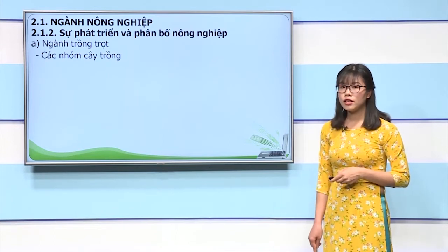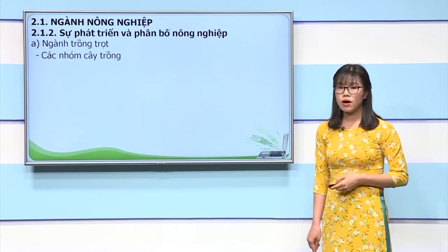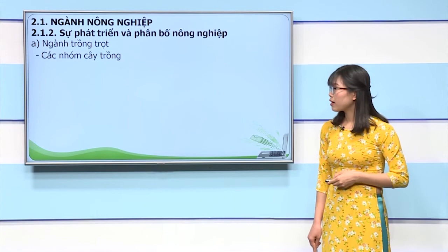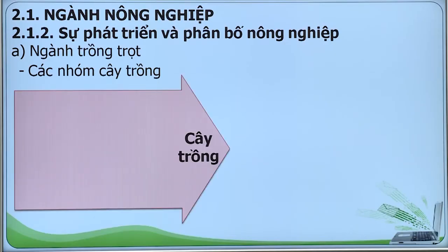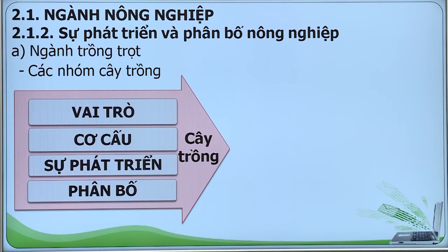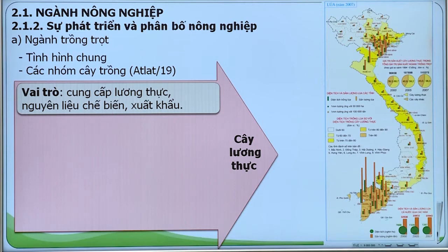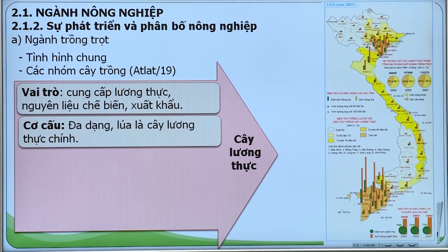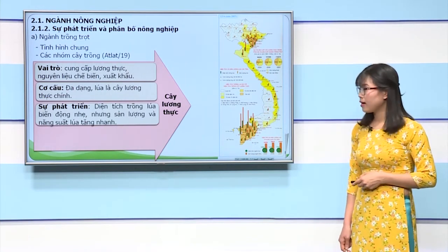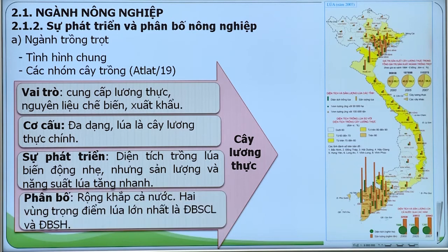Nước ta có 3 nhóm cây trồng chính: cây lương thực, cây công nghiệp, cây ăn quả, rau đậu và các cây khác. Về cây lương thực, đây là cây trồng chủ đạo, có vai trò cung cấp lương thực cho con người, thức ăn cho chăn nuôi, nguyên liệu cho công nghiệp chế biến và là mặt hàng xuất khẩu chủ lực. Cây lương thực gồm cây lúa và cây hoa màu, trong đó lúa là cây lương thực chính. Diện tích trồng lúa biến động nhẹ nhưng sản lượng và năng suất lúa tăng nhanh. Cây lúa phân bố rộng khắp cả nước, trong đó 2 vùng trọng điểm lúa lớn nhất là đồng bằng sông Cửu Long và đồng bằng sông Hồng.